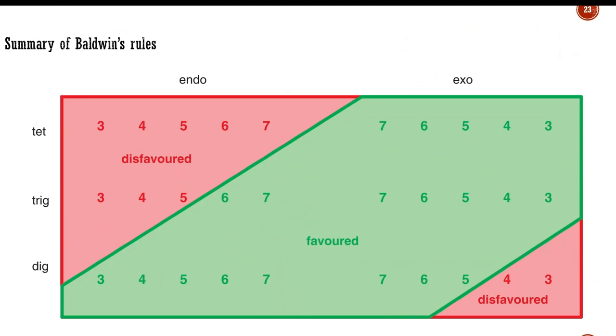Baldwin's rules can be summarized in a chart. You should note the general outline of this chart, commit to memory that, broadly speaking, endo-tetrahedral and endo-trigonal cyclizations are disfavored, exo-tetrahedral and exo-trigonal reactions are favored, and the reverse is true for digonal cyclizations.